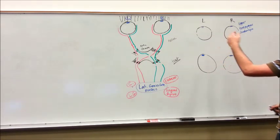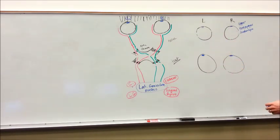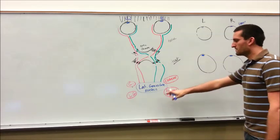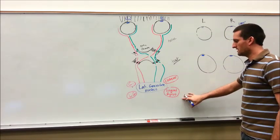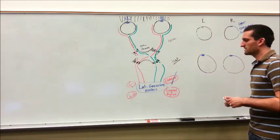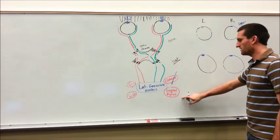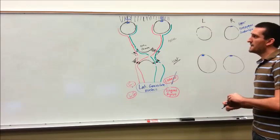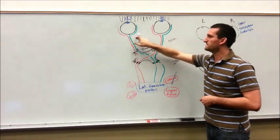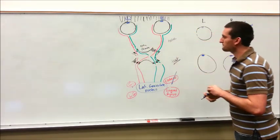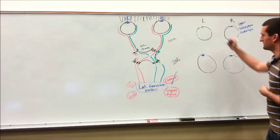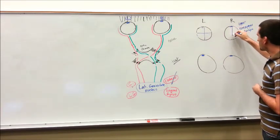We just covered tract lesions, nerve lesions, and optic chiasm lesions. Now let's get down into the receptor part of the brain — brain lesions. We've got our lateral geniculate nucleus, and you've got two different tracts: the cuneus tract and the lingual gyrus tract. Let's pretend we're making a cuneus tract lesion. The cuneus is going to be more superior; the lingual gyrus is going to be more inferior. This can trip up a lot of people. We've got light coming into both eyes hitting all four fields, and we see that we have a cuneus tract lesion.